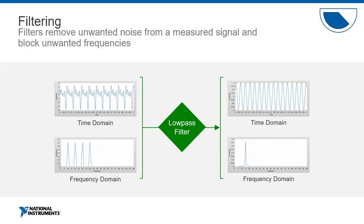Filtering is also incredibly important. Since noise is inevitable in the real world, it is often necessary to filter a signal to remove unwanted noise. One of the most common filters is the low-pass filter, which allows all frequency components lower than a specified cutoff frequency to pass, while filtering all components higher than the desired cutoff frequency. This is a great way to isolate the measurement you care about most and remove noisy signals that may be less relevant.